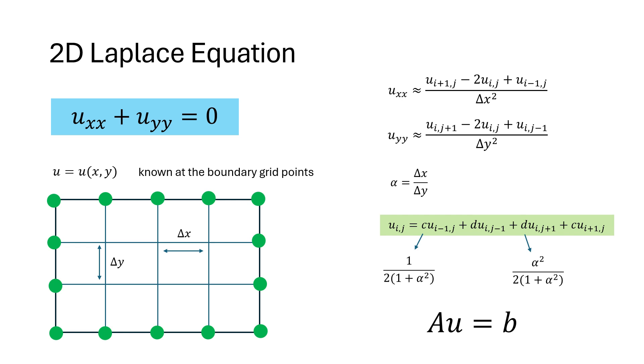Suppose we have m points in the x-direction and n points in the y-direction on the discrete grid, and we define k as the product of m minus 2 and n minus 2, since we do not include the boundary points as they are known. Then A is a k by k matrix, U is k by 1 vector of unknowns, and B is k by 1 vector of known constants.